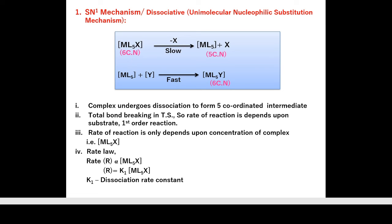To remember SN1: first step is dissociation of X giving five-coordinated intermediate ML₅, then association of Y gives ML₅Y. Total bond breaking occurs in transition state. The rate depends only on [ML₅X] — the '1' in SN1 indicates first-order reaction. Rate = k₁[ML₅X].